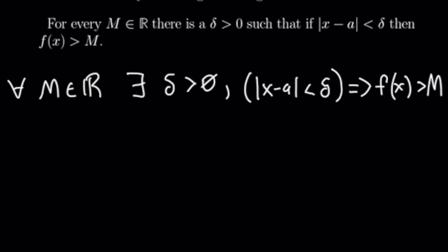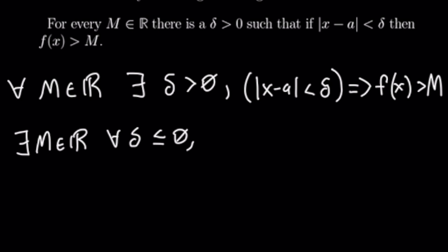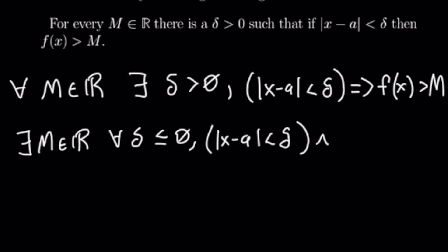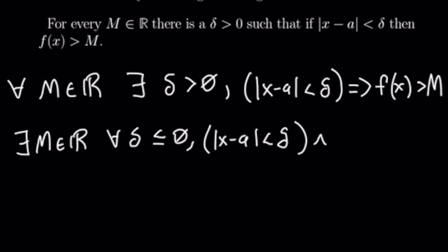So let's go ahead and negate this. The setup will be negated by changing the quantifiers — we'll have: there exists a real number m, for all delta less than or equal to zero. Then to negate the conditional, we keep the original p: the absolute value of x minus a is less than delta. Then we change the implication to an 'and' and negate q. So our not q is the negation of f of x greater than m, which we write as f of x less than or equal to m.